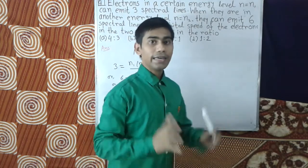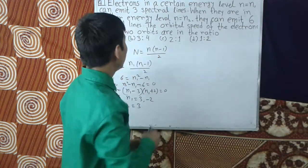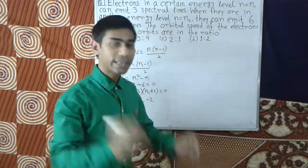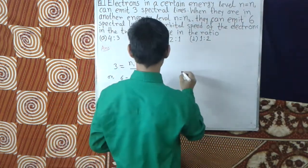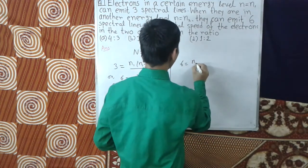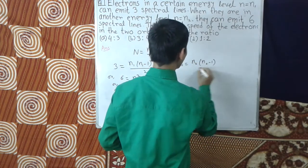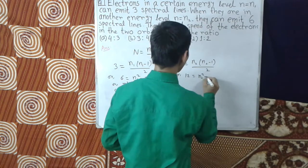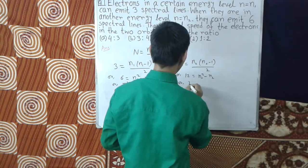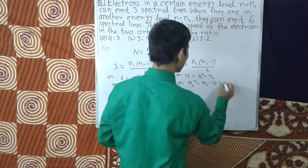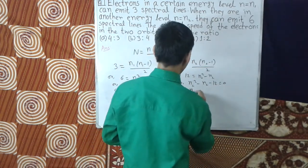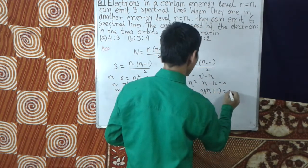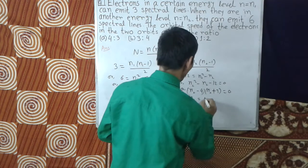Now it is given that in the second case at n=n2, six spectral lines are emitted. So for the second case we may write 6 = n2(n2-1)/2, or 12 = n2² - n2, or n2² - n2 - 12 = 0, or (n2-4)(n2+3) = 0. Hence n2 = 4 or -3.